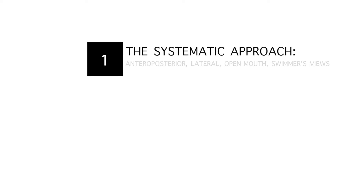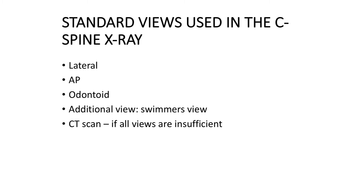This is an approach to a normal C-spine X-ray. The standard views used in the C-spine X-ray are the AP, lateral, and open mouth views. There are also additional views such as the swimmer's view or the flying angel view. A minimum of three views are required — the AP, lateral, and open mouth views — to ensure that no injuries are missed.